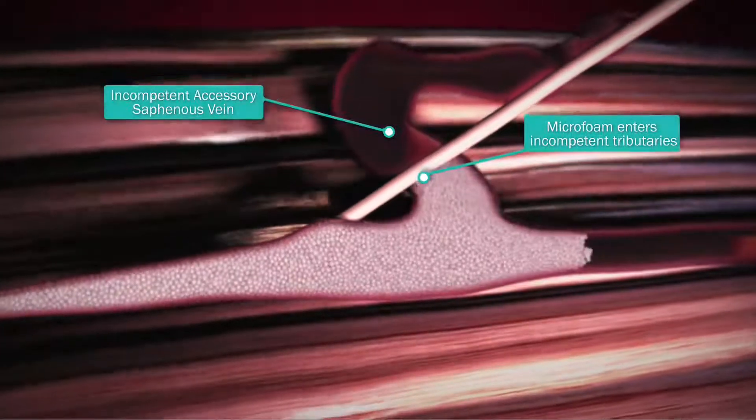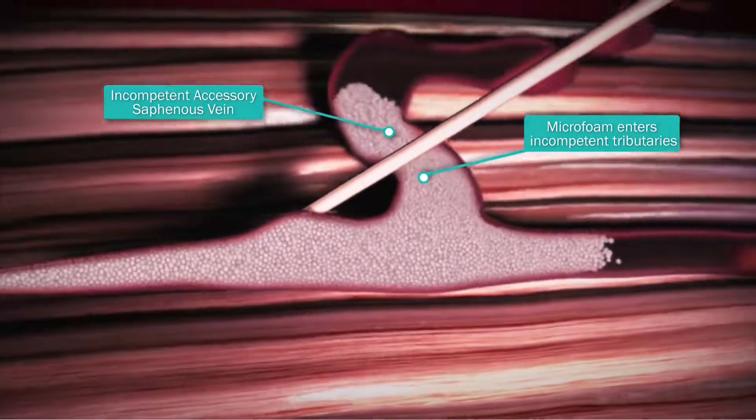Proximal pressure is applied to the GSV so that as the lumen contracts, the microfoam is forced distally past the injection site into other incompetent tributaries.